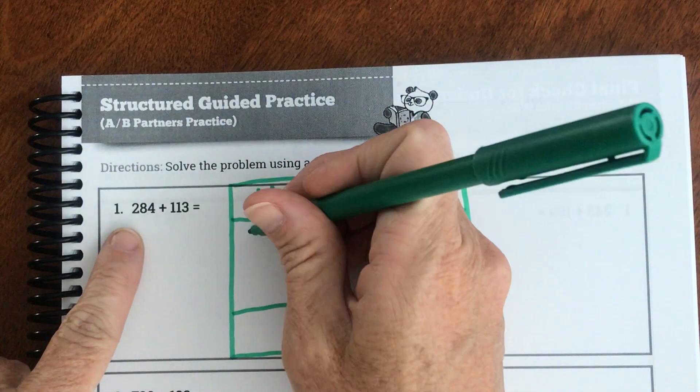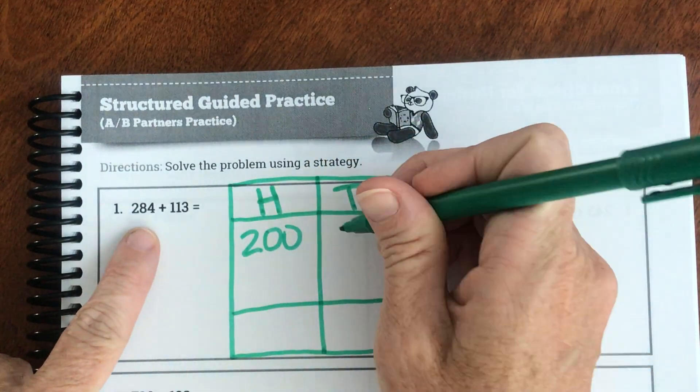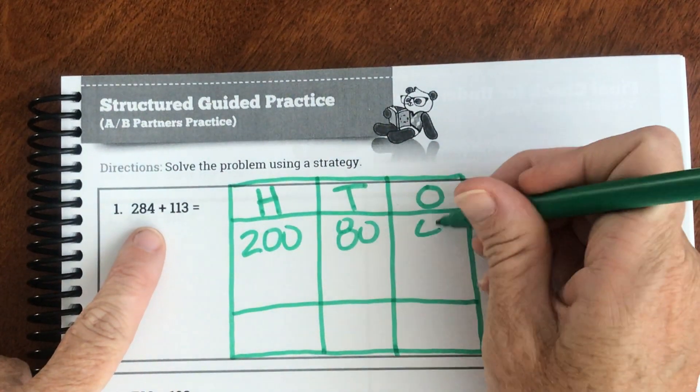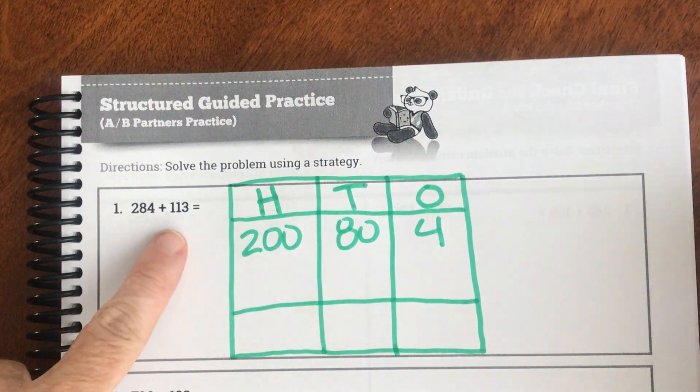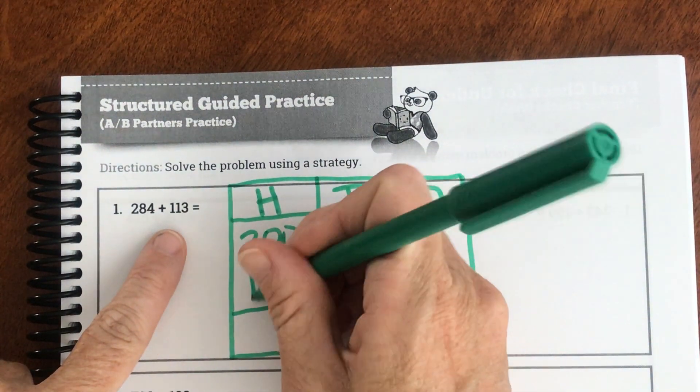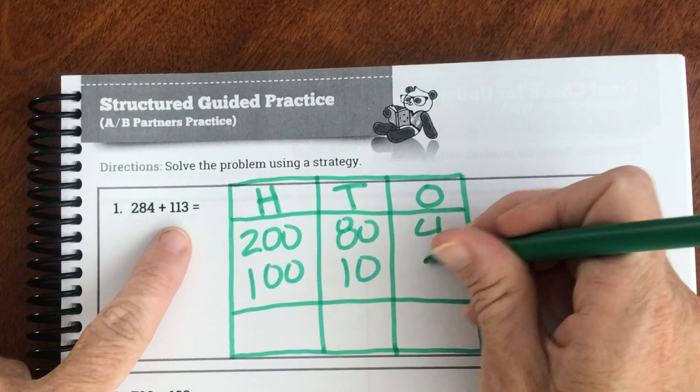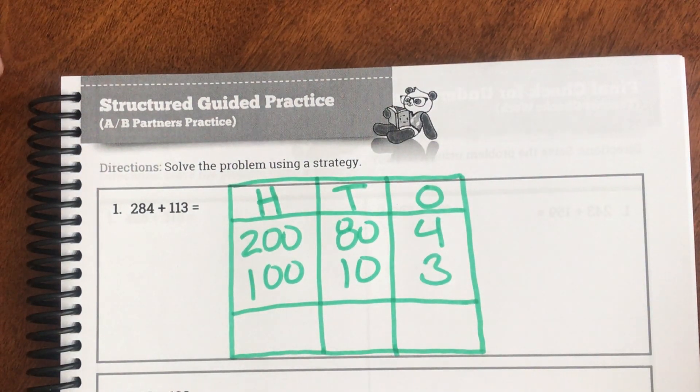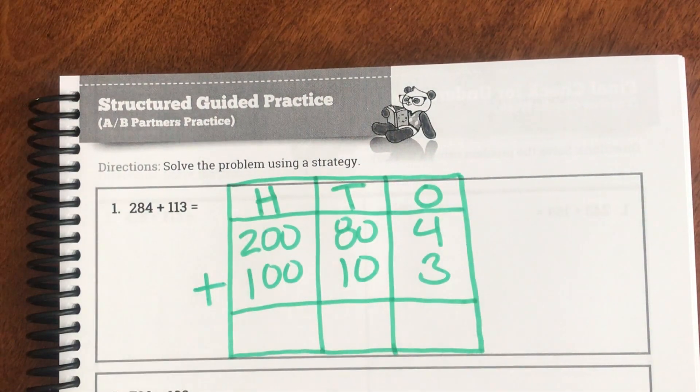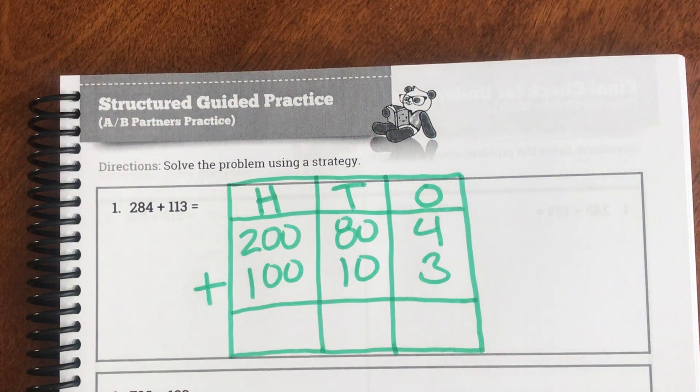So 284 means 200, 80, and 4. And 113 means 100, 10, plus 3. And we're adding. So that's step one.